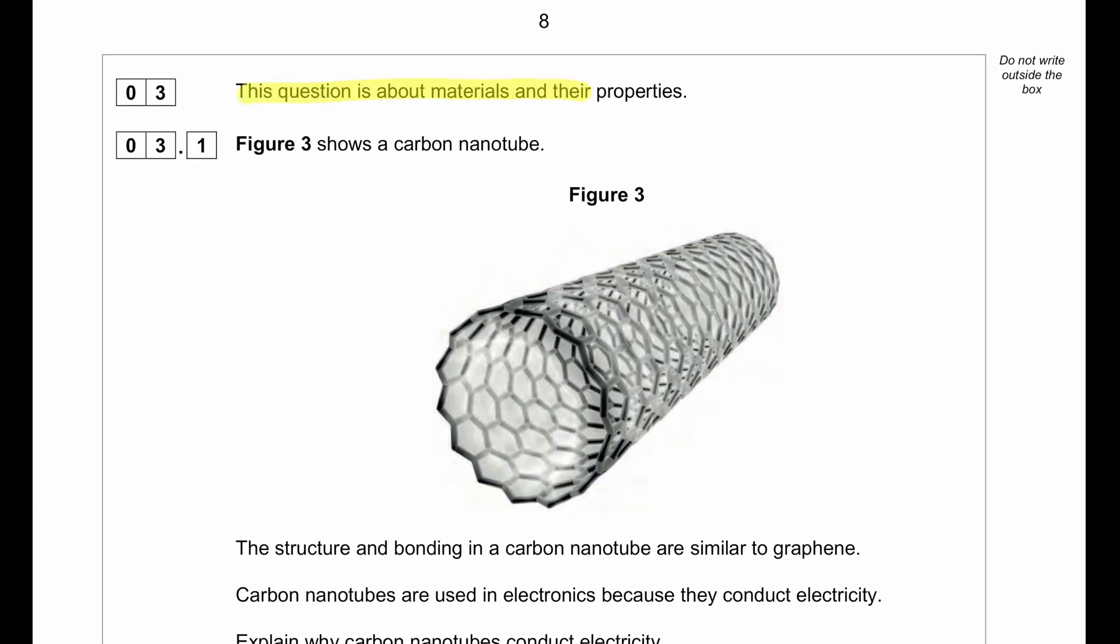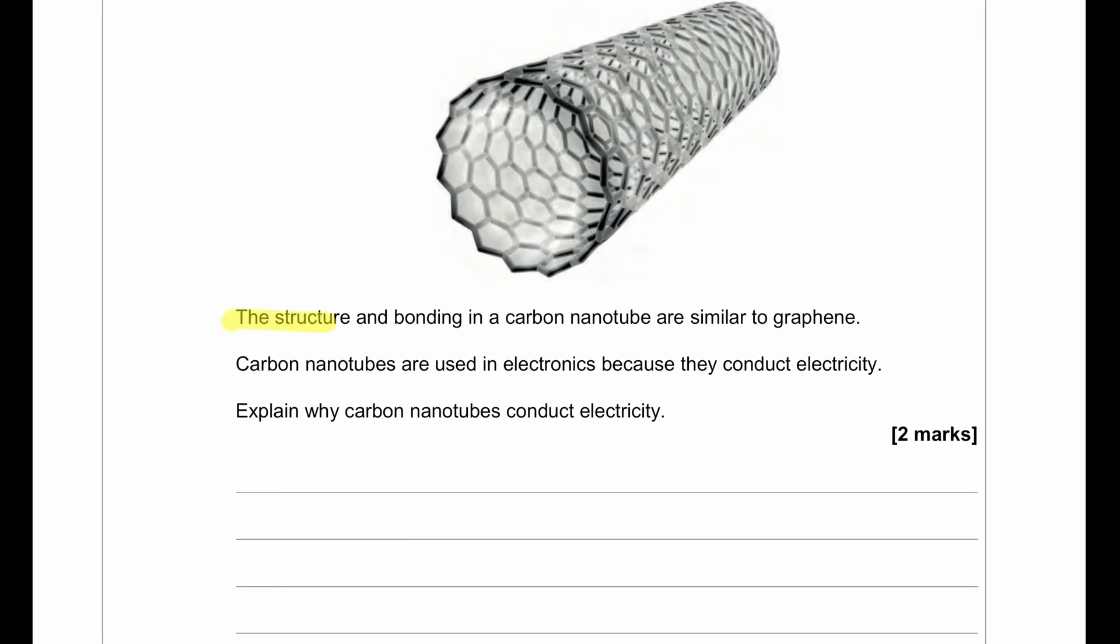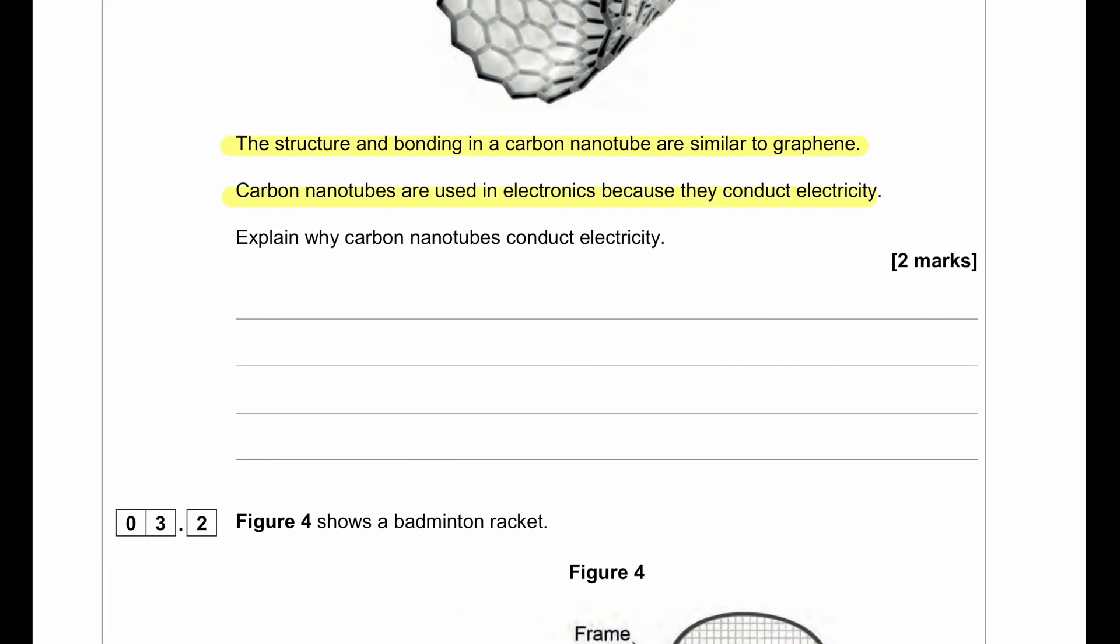This question is about materials and their properties. Figure 3 shows a carbon nanotube. The structure and bonding in carbon nanotubes are similar to graphene. Carbon nanotubes are used in electronics because they conduct electricity. Explain why carbon nanotubes conduct electricity. Carbon nanotubes contain delocalized electrons. The electrons can move through the structure and carry charge.